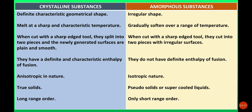They are also known as crystalline substances or amorphous substances. Crystalline solids have a regular arrangement, while amorphous solids have an irregular arrangement — they do not have a regular arrangement.